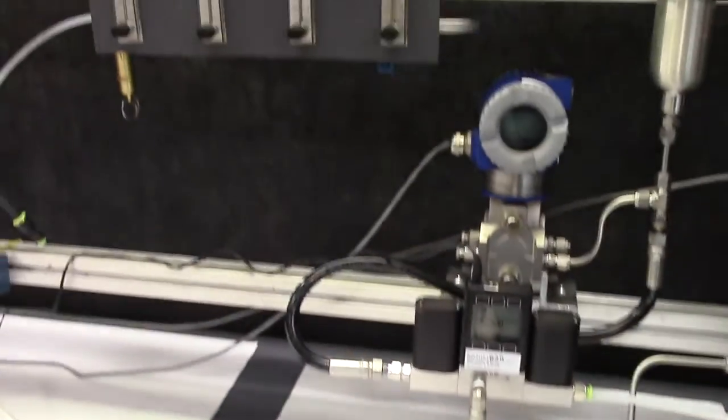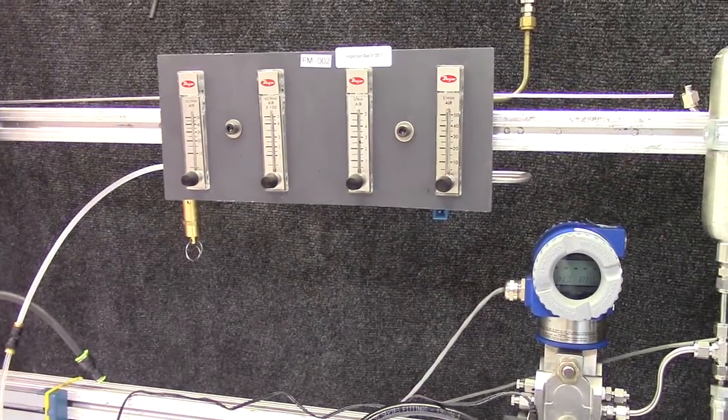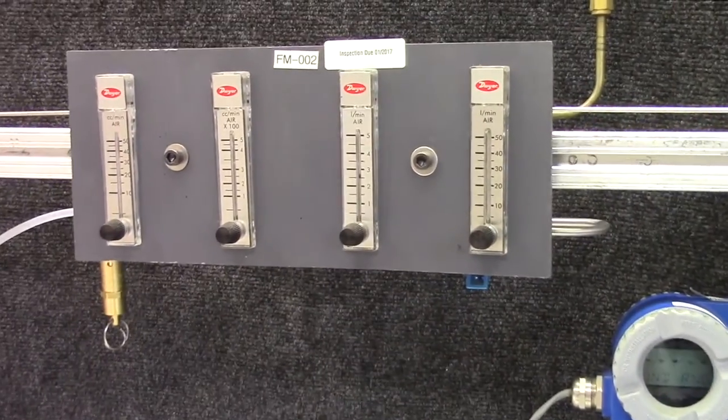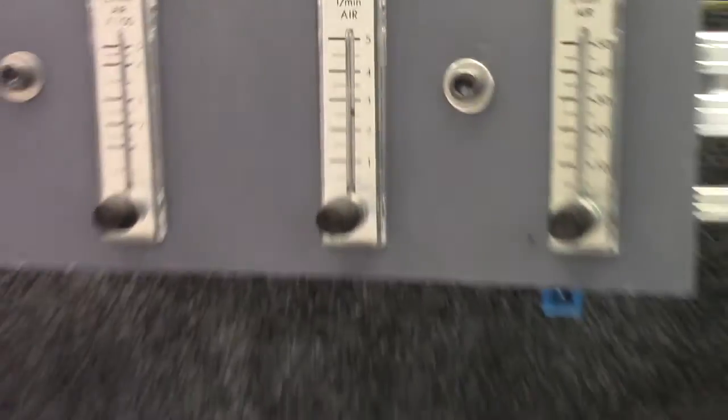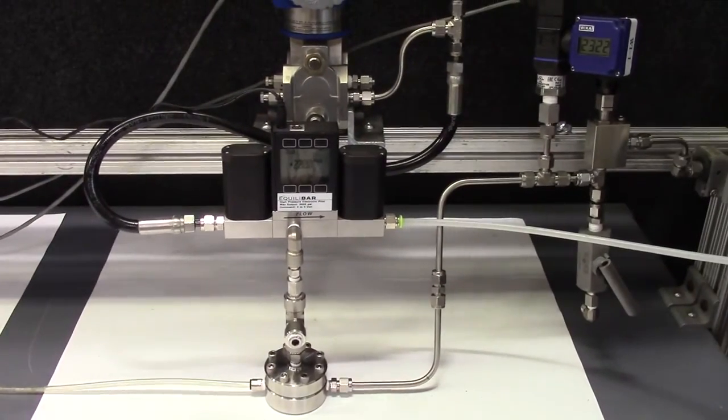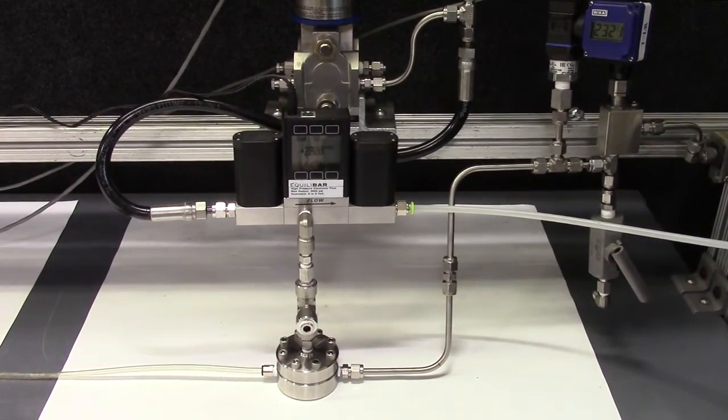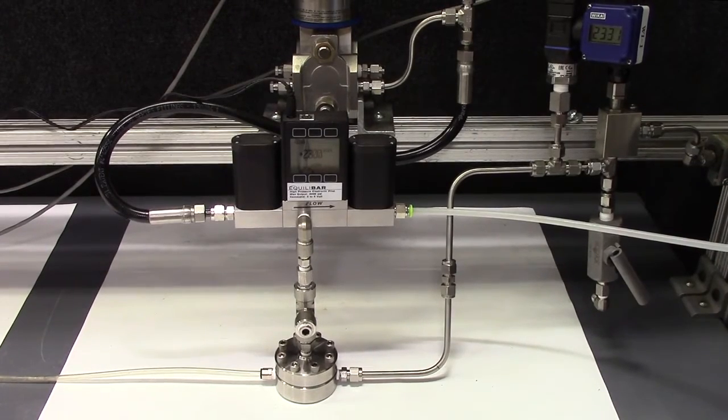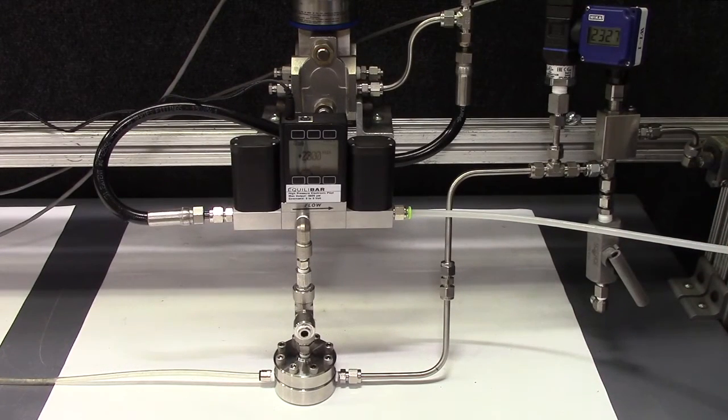Finally, we will take a look at the flow rates here. The system is currently operating at 2600 cc a minute. What I'll do is adjust the needle valve to demonstrate how the pilot pressure and the inlet pressure remain stable, although the flow rates are changing in the system.